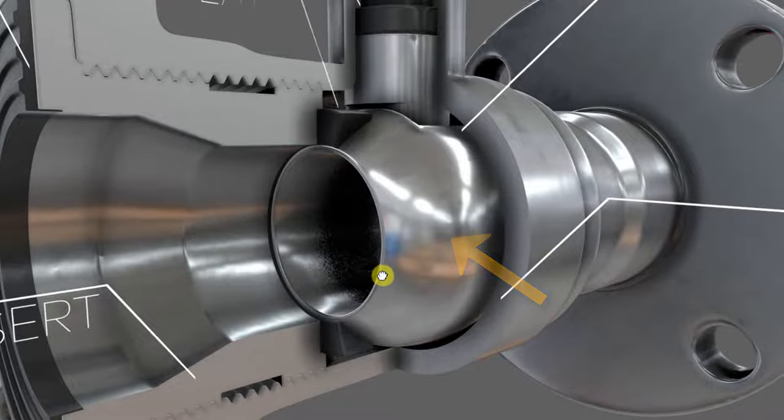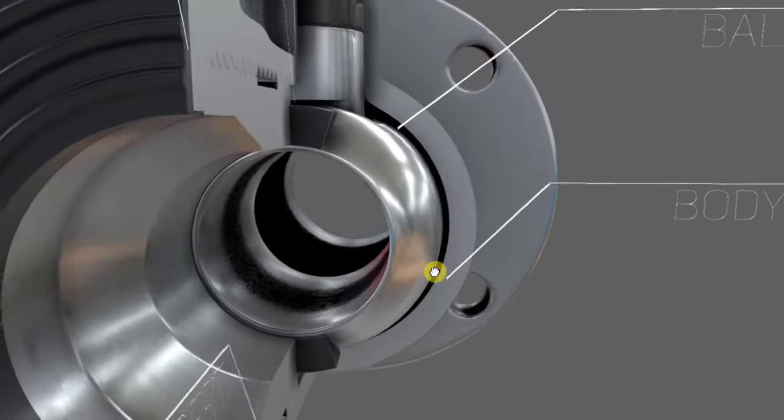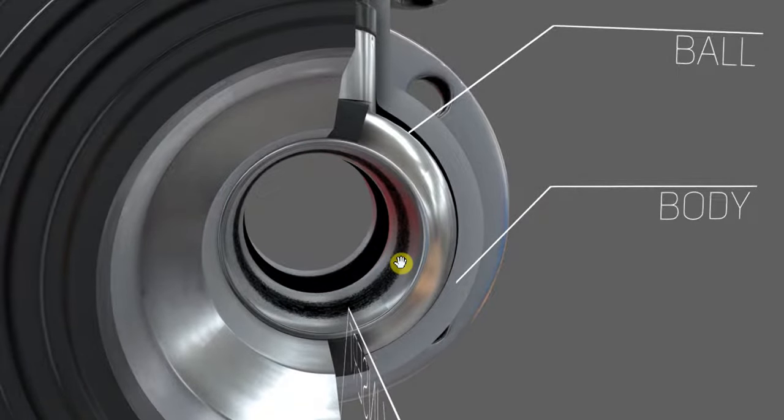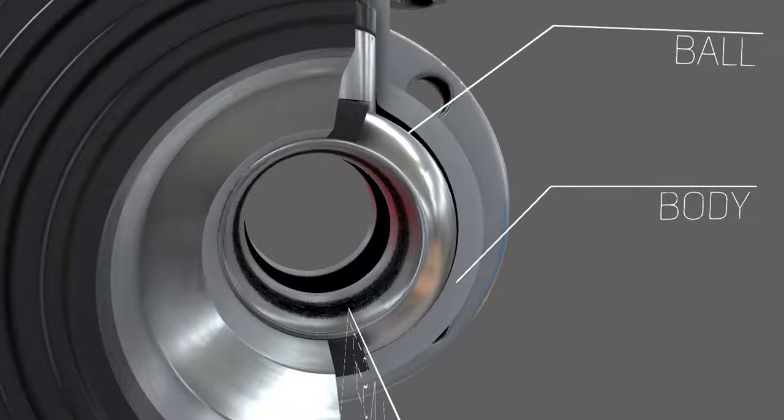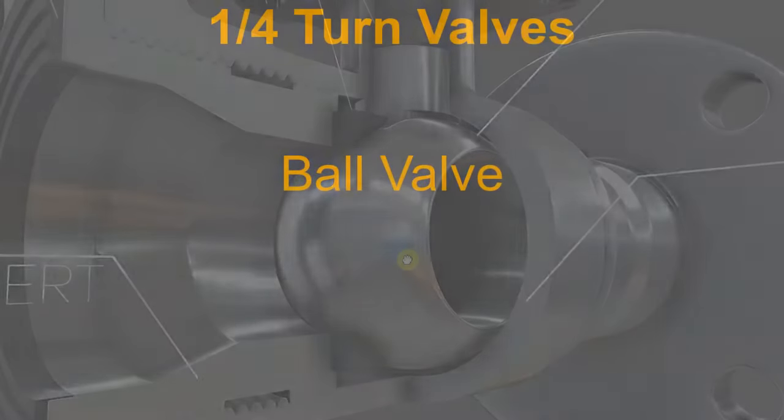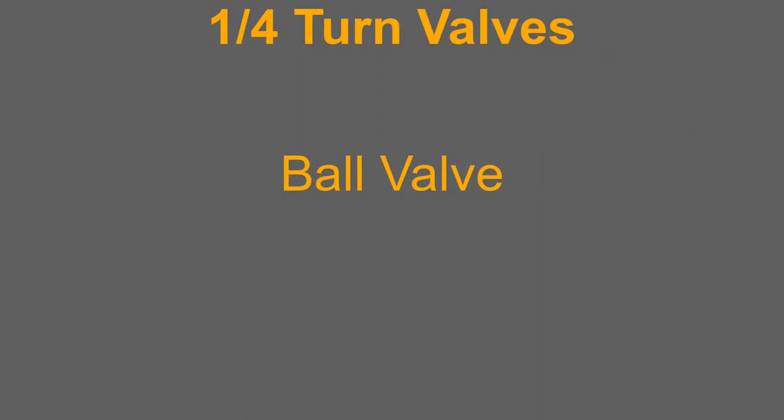And we can see now that the ball valve is in the fully open position. We can see directly through the valve. If we press the play button, the animation now will close the valve. And what we've effectively done is stop the flow. Notice that we only turn the valve 90 degrees. So this type of valve belongs to our quarter turn or 90 degree rotation valve family.